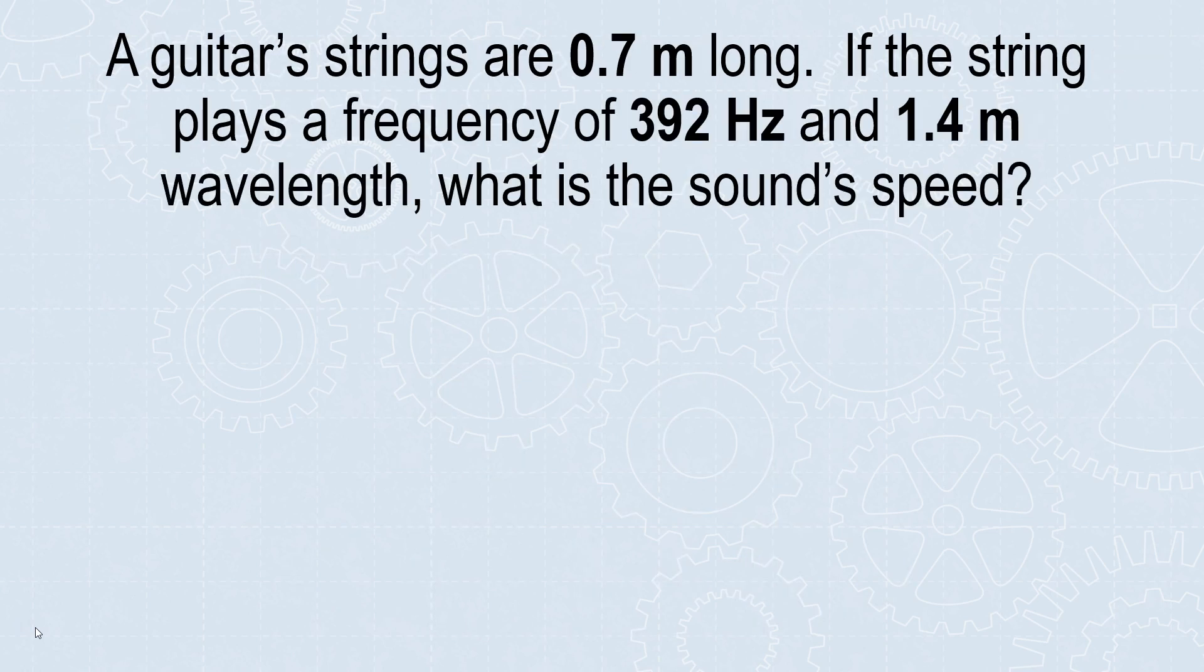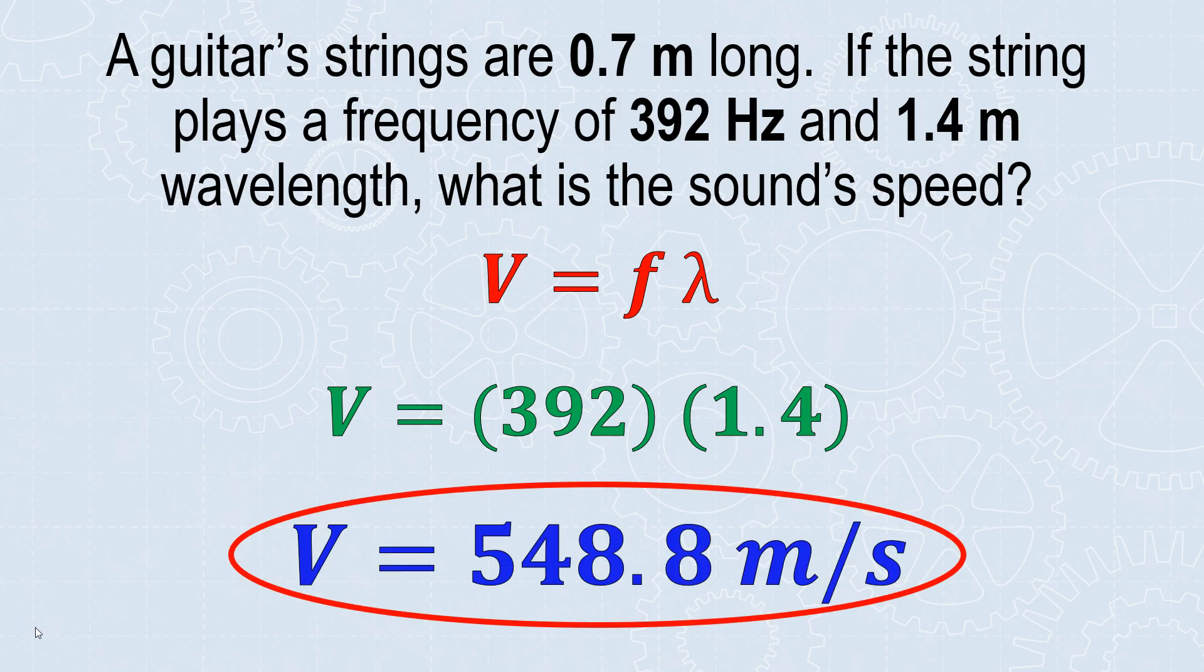The guitar string is a different medium than air, so we need to find the speed of sound in that string. We know the frequency of the note being played and the wavelength. So we use v = f × λ. The variables you're given tell you which formula to use. I was given frequency and solved for wavelength. Now I use them to solve for velocity. Multiply them together - 548.8 m/s. This makes sense. Sound travels faster through solid materials than through air because the molecules are more lined up.